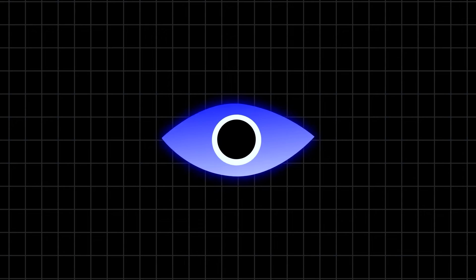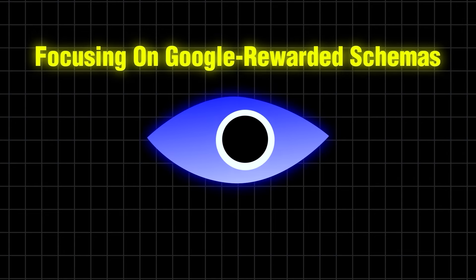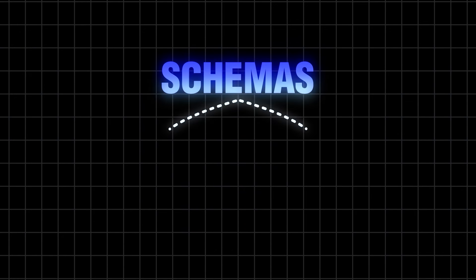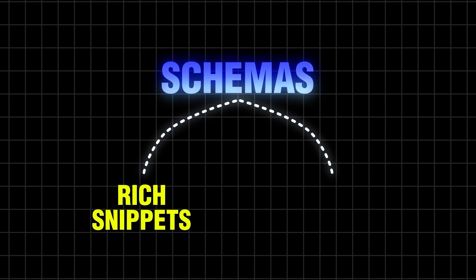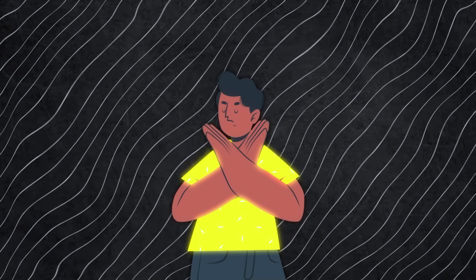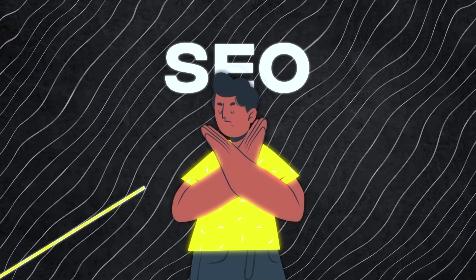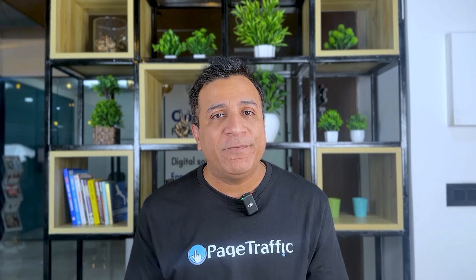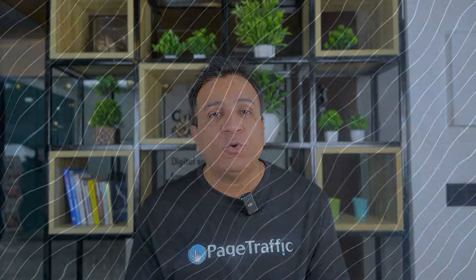The last tip is really important in order to succeed with schema markup: focus on Google-rewarded schemas and don't get distracted. Prioritize schemas that lead to rich snippets and enhanced listings — concentrate on reviews, product, recipe, and event schemas. Avoid unnecessary schemas that don't impact SEO performance and are not relevant to your business.